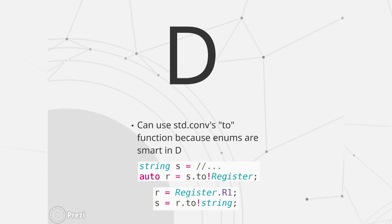It's basically done for you. If you use std.conv — the conversion module, which I love because the description is 'your one-stop shop for all your conversion needs' — in D you just use std.conv.to, because enums are smart. I have access at compile time to the name of the symbol and the value it's associated with. So I just do: string.to!Register — and because of UFCS, Universal Function Call Syntax, this looks really nice. And if I want to convert the other way, I take the register value and do r.to!string. Done. Ta-da!